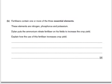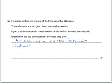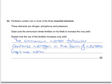Here's a past paper question. Fertilizers contain one or more of the three essential elements — nitrogen, phosphorus and potassium. Dylan puts the ammonium nitrate fertilizer on his fields to increase the crop yield. Explain how the use of this fertilizer increases crop yield — two marks. One mark will be for saying that the ammonium nitrate fertilizer contains nitrogen in the form of nitrates. Crops use nitrogen to make proteins for growth.